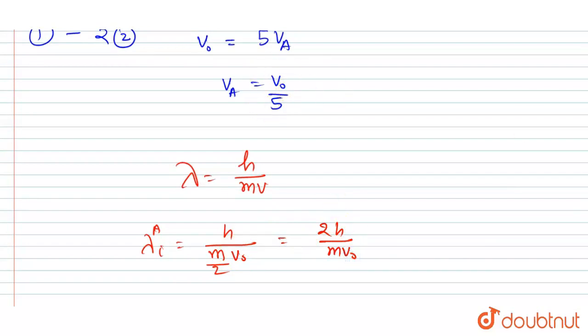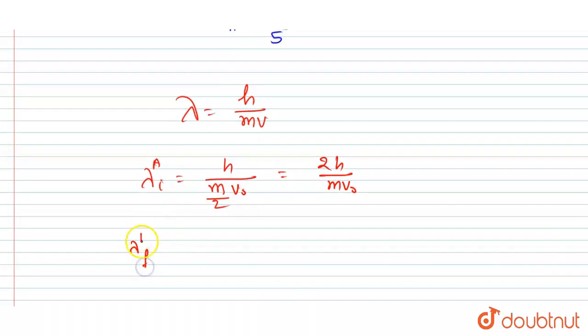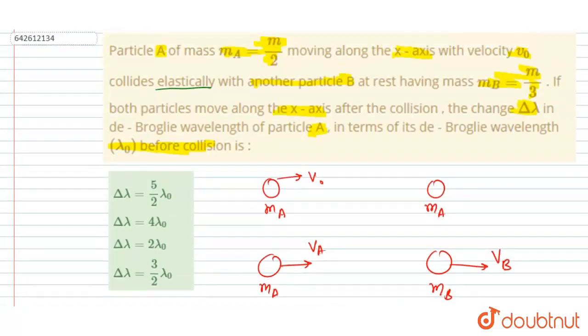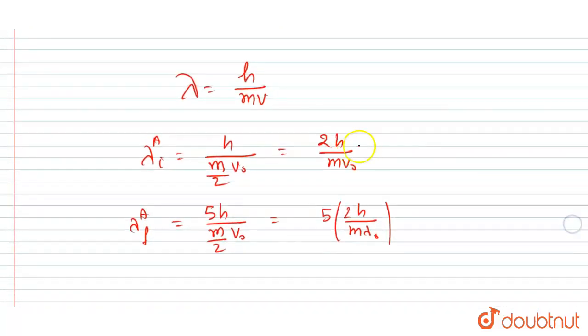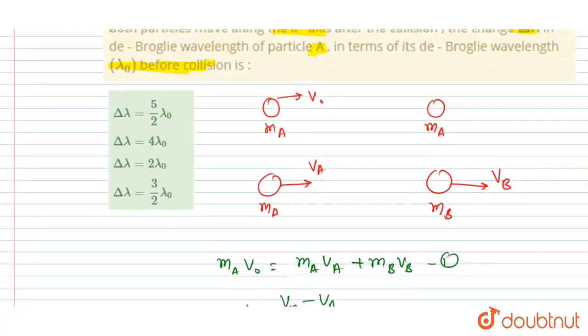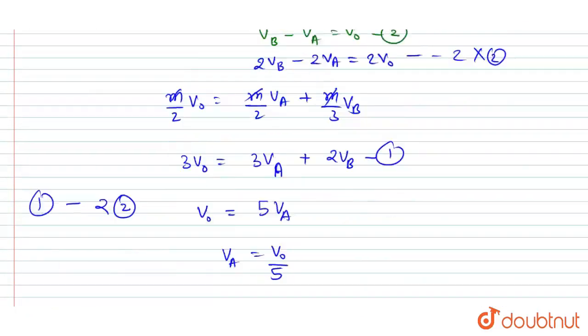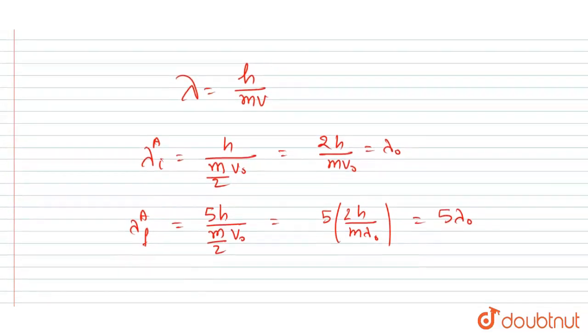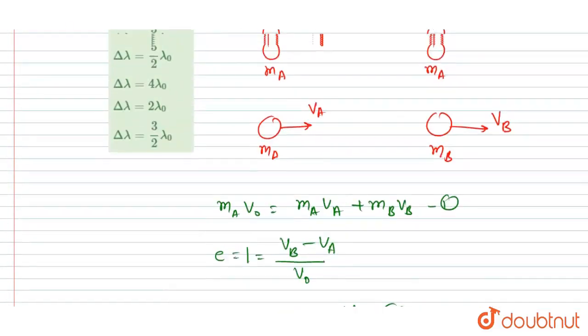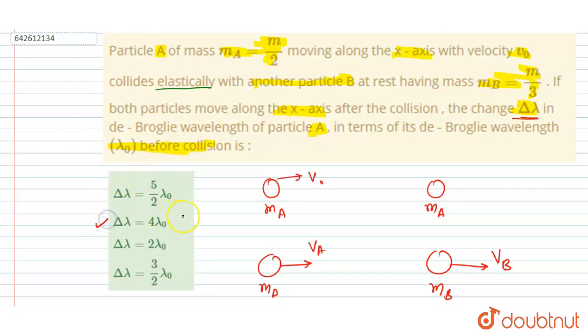And finally it is having velocity v₀/5, so I will write final de Broglie wavelength of A. The mass will remain the same, that is m/2, and velocity is v₀/5. So you can see it is 5 times the initial de Broglie wavelength. So this is 5λ₀. Now you can answer this question. You have to find out the change in de Broglie wavelength Δλ. So you can see 5λ₀ is the final and λ₀ is the initial, so the answer will be 5 - 1, that is 4λ₀. So this will be the answer.